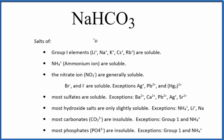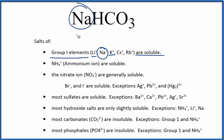If we look at our solubility rules, we can see group one elements like lithium, sodium, and potassium — they are soluble. And here's our sodium. So this is going to be a soluble compound. NaHCO3 is soluble because it has that sodium ion attached to our polyatomic ion, the bicarbonate ion.